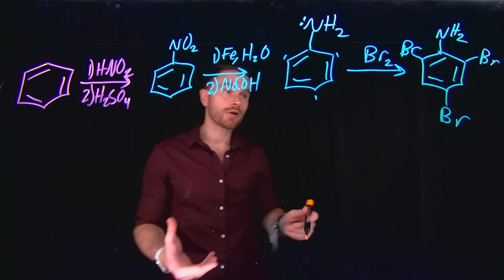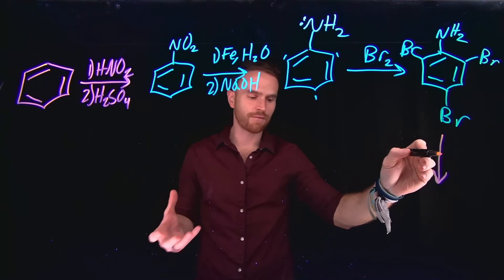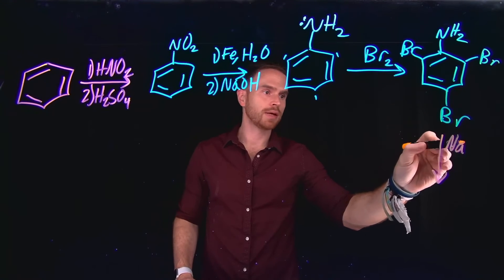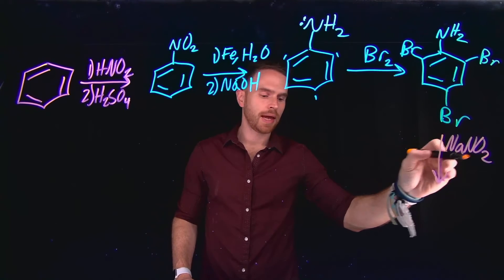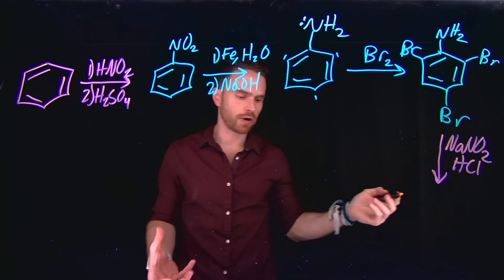And then from here, what I can do is turn this primary amine into a diazonium salt using the information that we just learned. So NaNO2, in the presence of a strong acid, so hydrochloric acid,